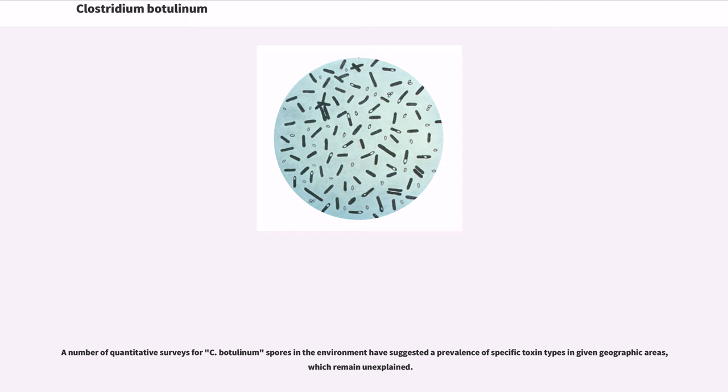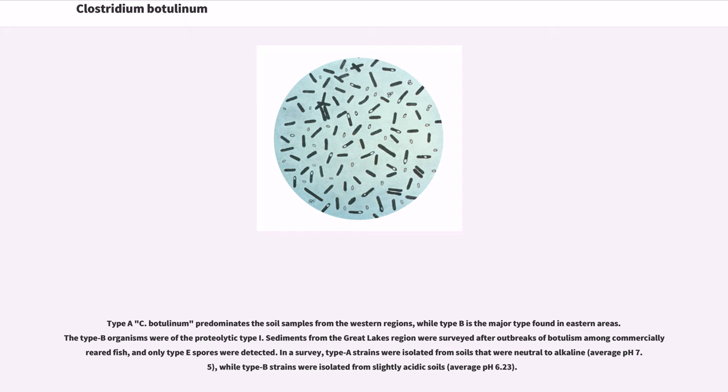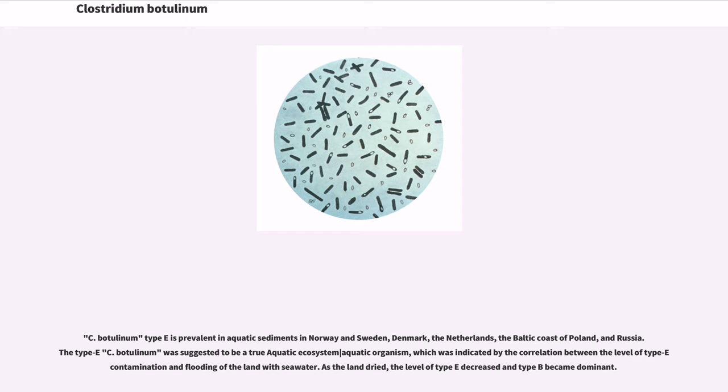A number of quantitative surveys for C. botulinum spores in the environment have suggested a prevalence of specific toxin types in given geographic areas, which remain unexplained. Type A C. botulinum predominates the soil samples from the western regions, while type B is the major type found in eastern areas. The type B organisms were of the proteolytic type I. Sediments from the Great Lakes region were surveyed after outbreaks of botulism among commercially reared fish, and only type E spores were detected. In a survey, type A strains were isolated from soils that were neutral to alkaline, while type B strains were isolated from slightly acidic soils. C. botulinum type E is prevalent in aquatic sediments in Norway and Sweden, Denmark, the Netherlands, the Baltic coast of Poland, and Russia. The type E C. botulinum was suggested to be a true aquatic organism, which was indicated by the correlation between the level of type E contamination and flooding of the land with sea water. As the land dried, the level of type E decreased and type B became dominant.